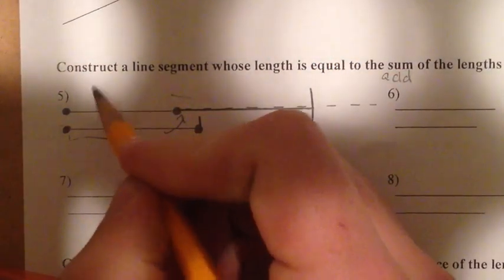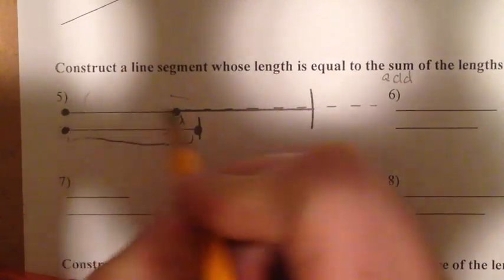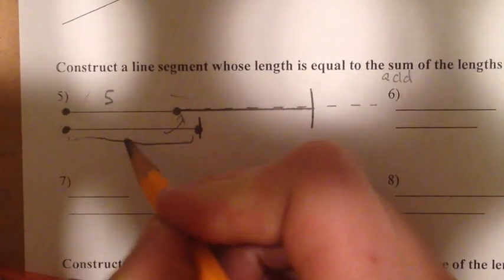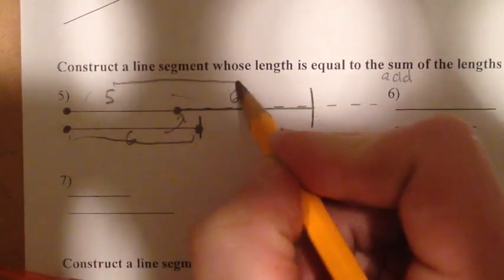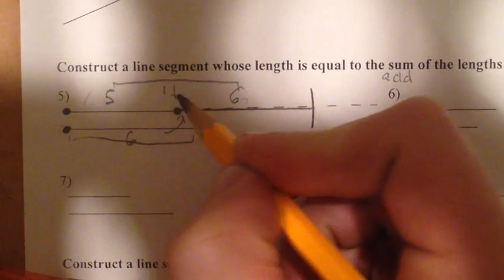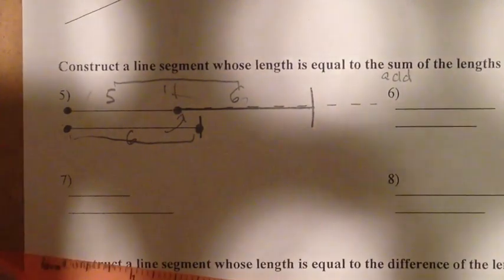So now I've added, let's call this if this was, I don't know, about five units long and then this was six units long and then I put the six units up here. Now, all together, that would be 11 units because I added them together. So that's how you add two segments together.